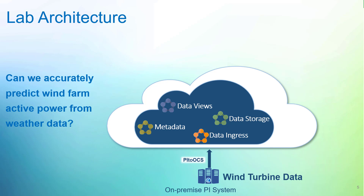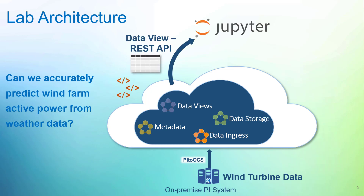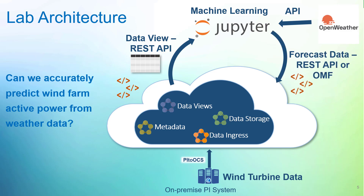We will then access this data view programmatically in a Jupyter Notebook using REST API, and use this dataset to train, test, and evaluate a machine learning model. Next, we will use our machine learning model to forecast power generation by retrieving weather forecast data in the Jupyter Notebook from the OpenWeather API. We will then send this forecast data back to OCS via REST API. Note that you can also send data back to OCS via OSIsoft Message Format, or OMF.